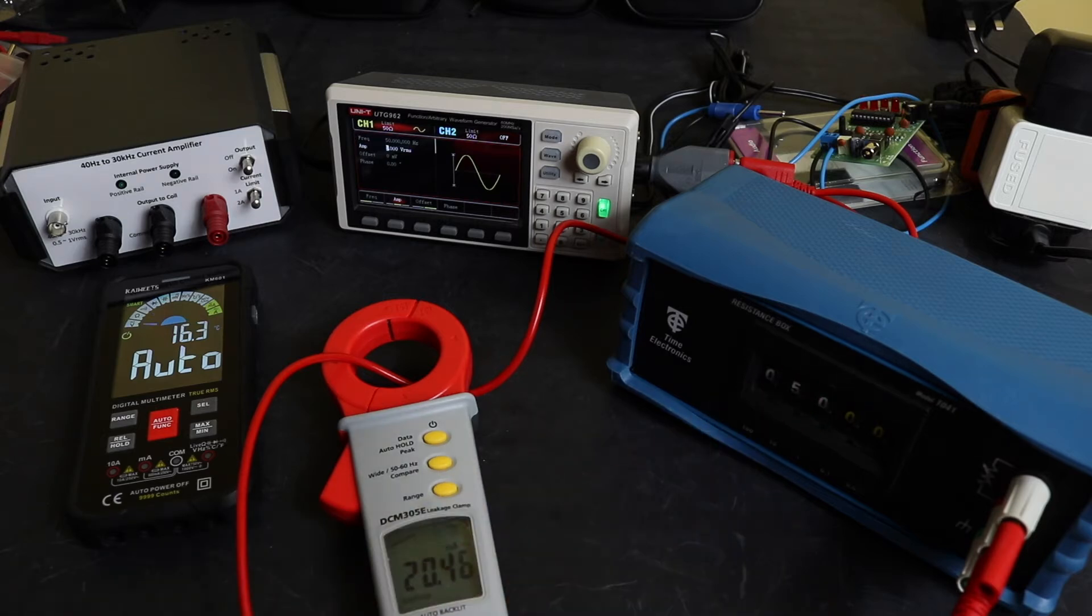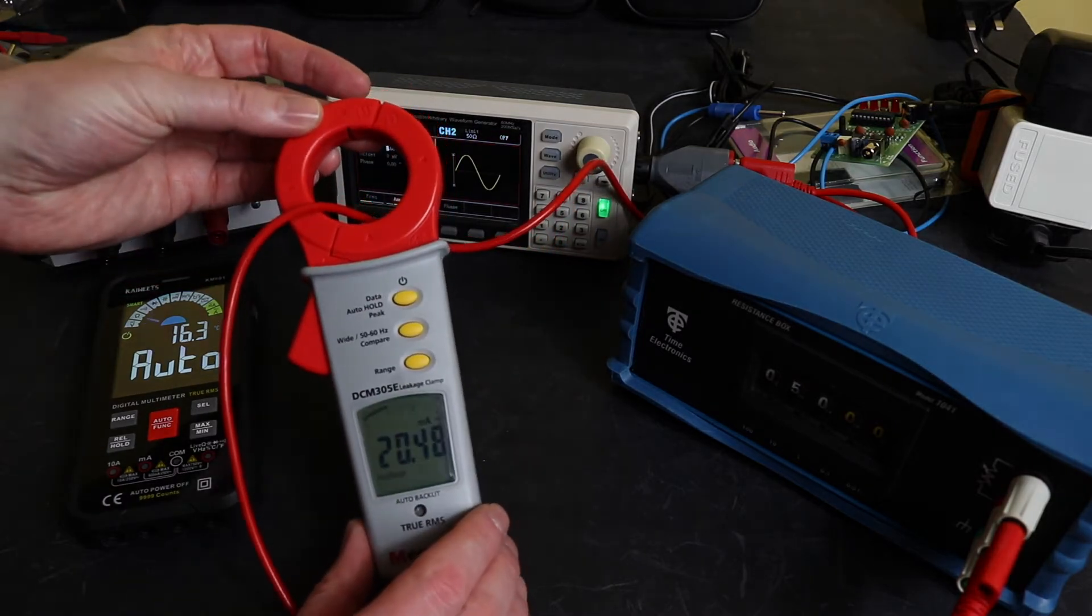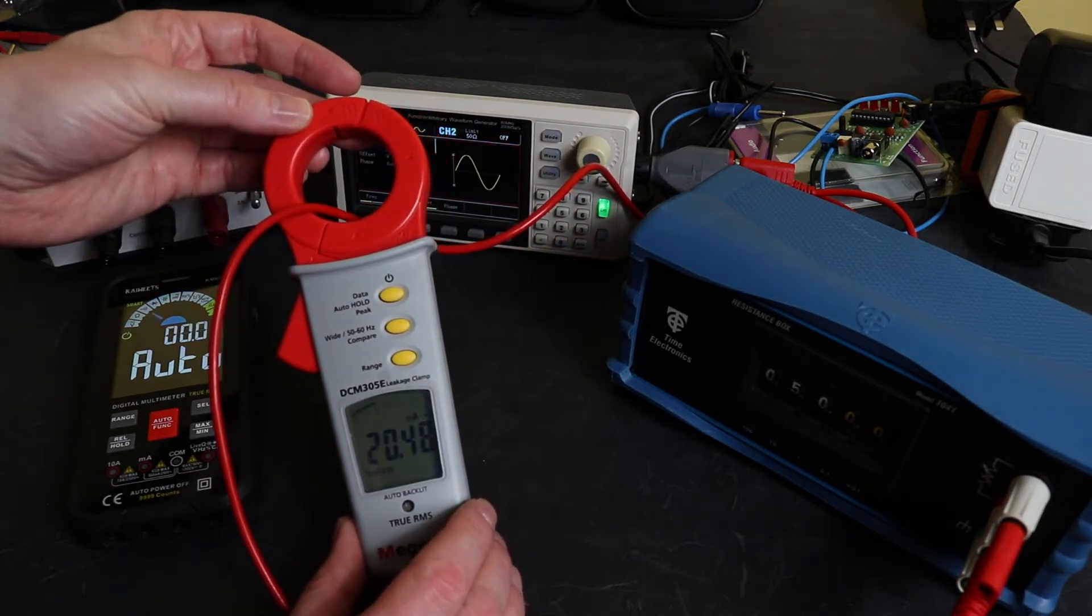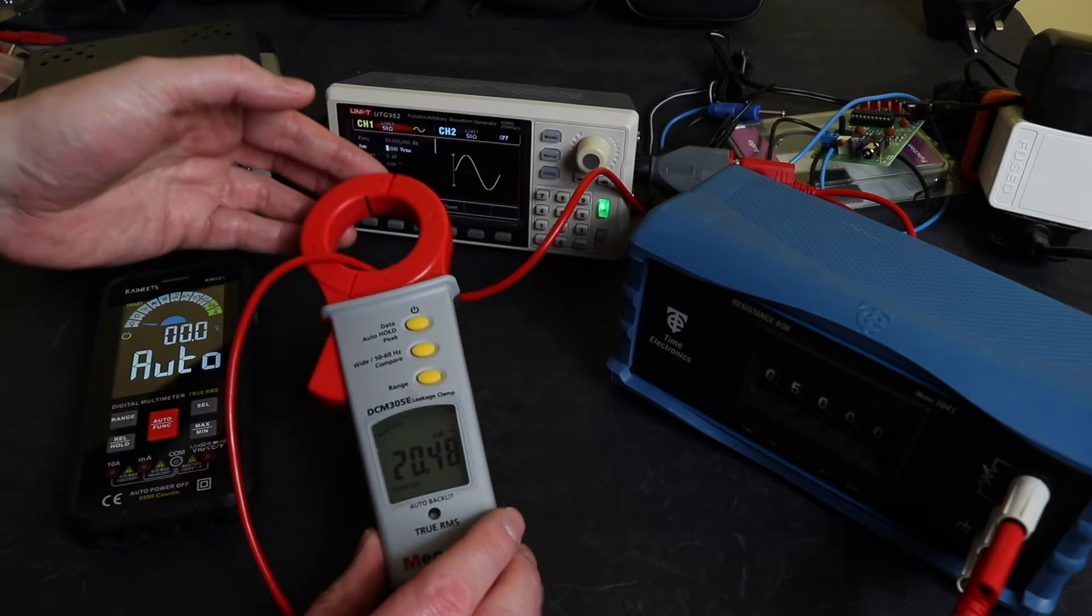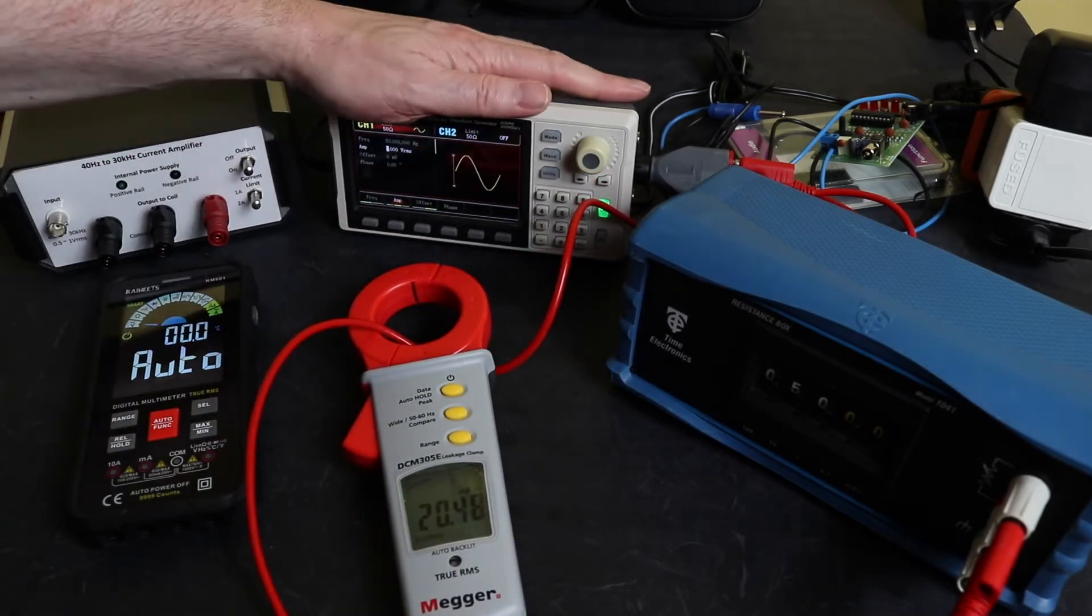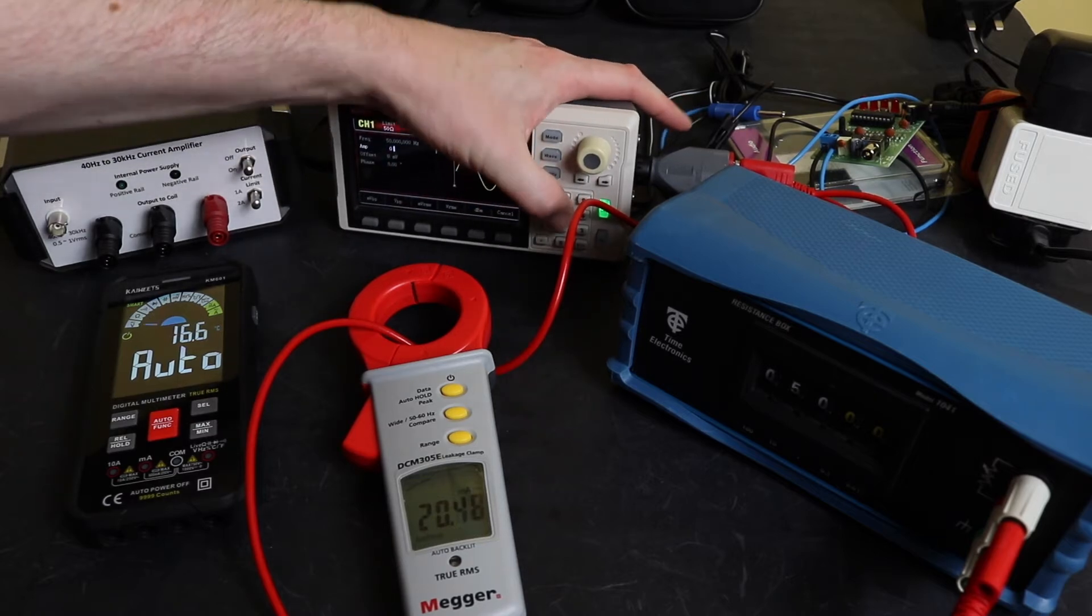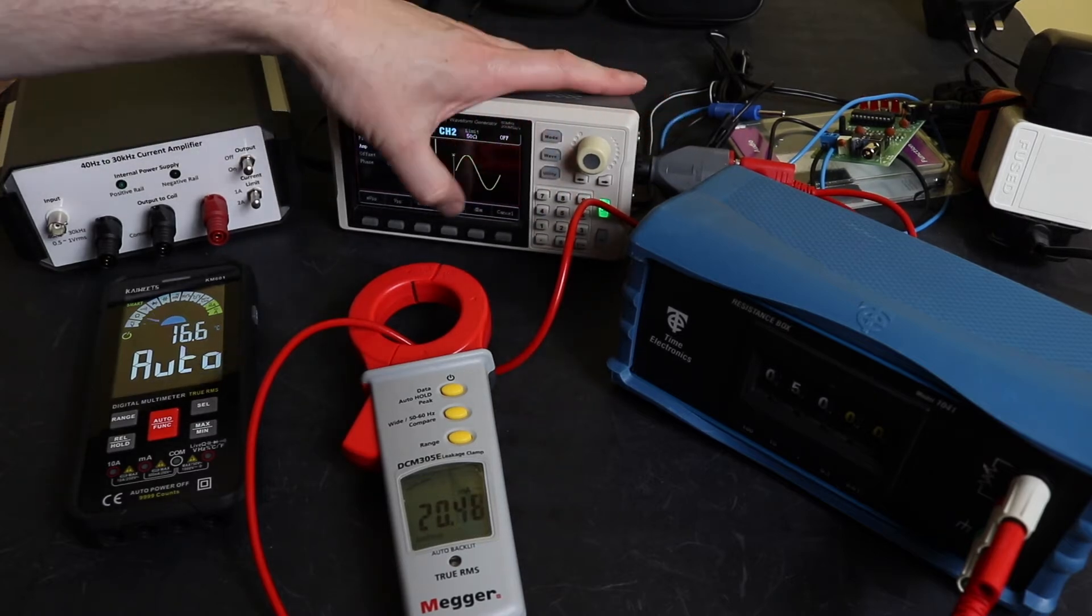You turn the output on and one volt RMS with a 50 ohm load in it should give me about 20 milliamps. You can see there I've got 20.49 milliamps going through that. I can change the output of this to 0.5 volts and that should give me 10 milliamps. There we've got 10.22 milliamps there, so that works reasonably well.